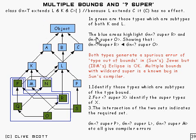And these blue areas, these blue areas around here, highlight two particular types. There's super R which has got just R and F in it. And there's super O which has got O,